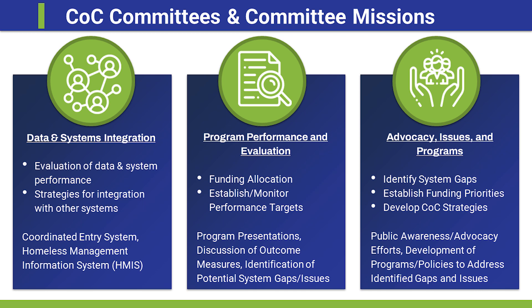The Advocacy Issues and Programs Committee focuses on identifying system gaps — potentially taking gaps identified by the Program Performance and Evaluation Committee and moving those forward: doing more investigation, researching strategies and best practices, and developing solutions. That can include establishing funding priorities, determining what specific things we want to put our funding behind to meet our goals, and developing our overall COC strategies. That committee also focuses on advocacy efforts — such as advocating against something like House Bill 5, raising general awareness in the community to gain support from elected officials or individuals who might help us tackle a particular issue.